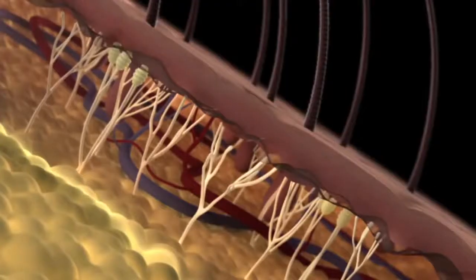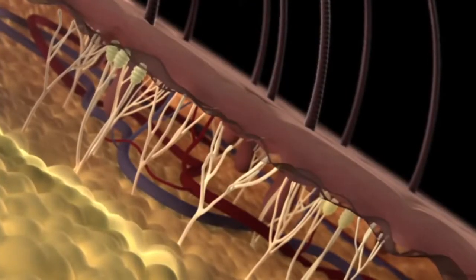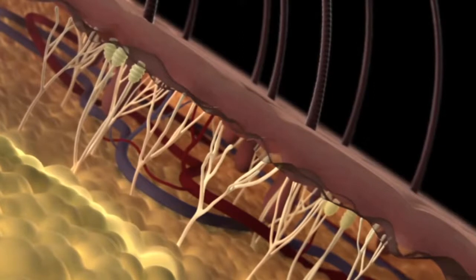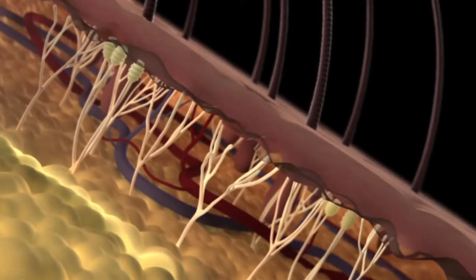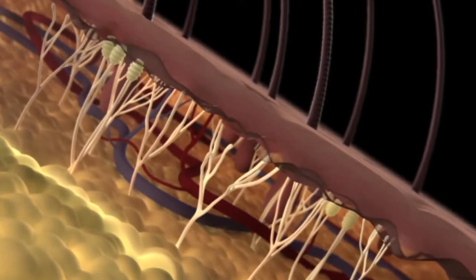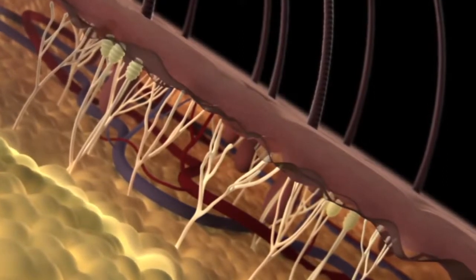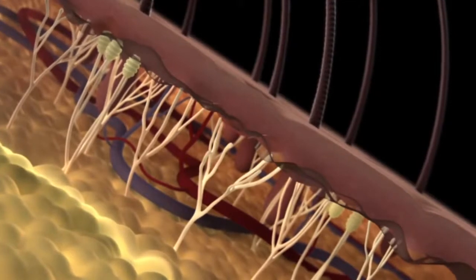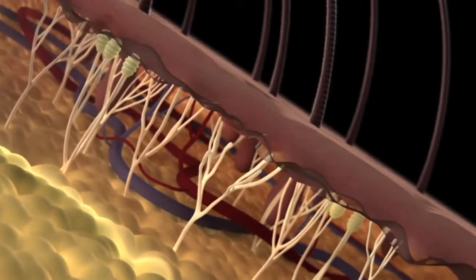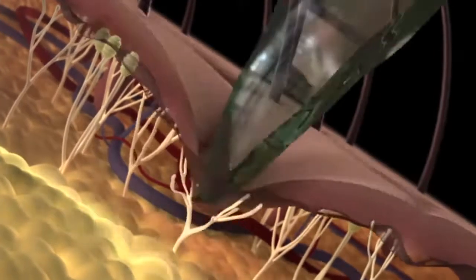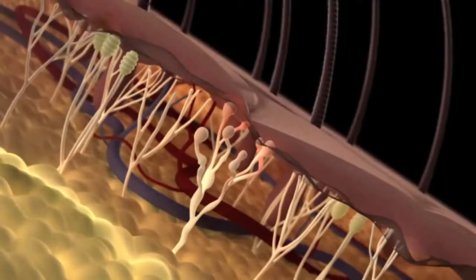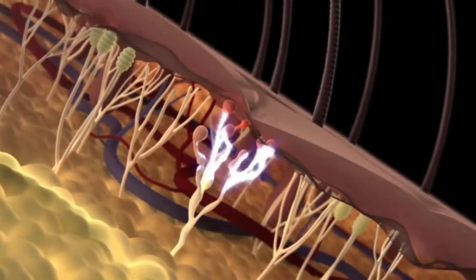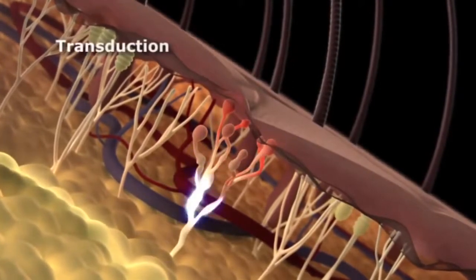Nociceptive pain originates in the nociceptors, which are highly specialized primary sensory neurons found primarily in the skin, joints, or the walls of organs. These receptors convert noxious stimuli into electrical current through a process called transduction.